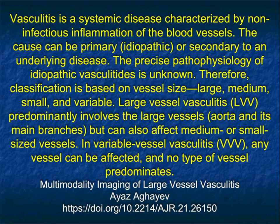The cause can be primary or secondary to an underlying disease. The precise pathophysiology of idiopathic vasculitis is unknown. Therefore, classification is based on vessel size: large, medium, small, and variable. Large vessel vasculitis predominantly involves the large vessels like the aorta and its main branches, but can also affect medium or small size vessels. In variable vessel vasculitis, any vessel can be affected and no type of vessel predominates.